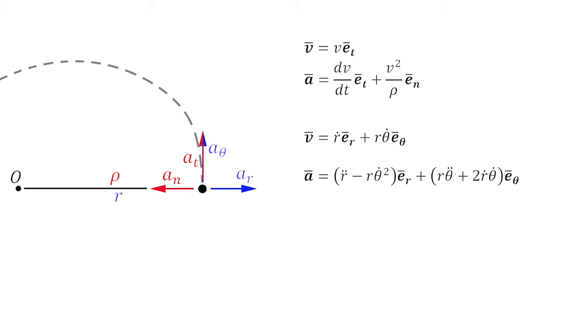It is interesting to note that for this point in time, the polar point of reference and the center of curvature are currently at the same point. This means that the tangential and traverse accelerations will be exactly the same, while the normal and radial accelerations will share the same magnitude and be oriented in different directions.